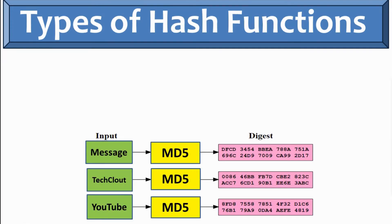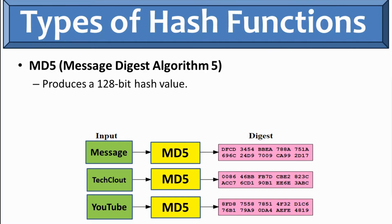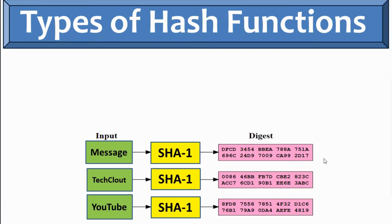Now let's understand the types of hash in message digest. At first we have MD5, Message Digest Algorithm 5, which produces 128-bit hash value and not recommended for cryptographic security due to vulnerabilities. Then SHA-1, Secure Hash Algorithm 1. It produces 160-bit hash value, deprecated for cryptographic use due to vulnerability also.